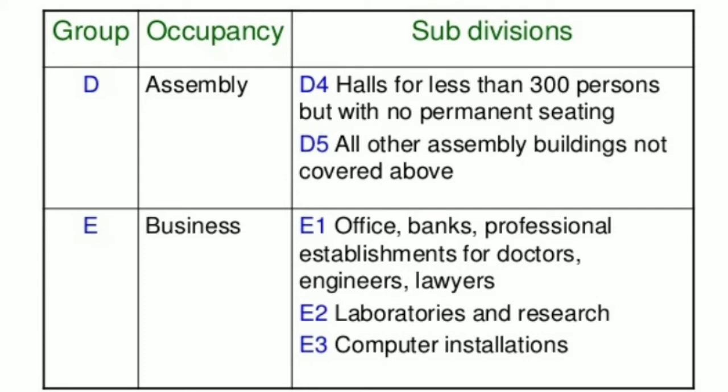Group E is Business Buildings, classified into E1, E2, and E3. E3 covers Computer Installations.